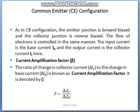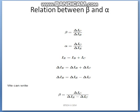The current amplification factor is denoted by beta. It is the ratio of change in collector current to change in base current. In common base configuration, the amplification factor is alpha, which is the ratio of change in collector current to change in emitter current.